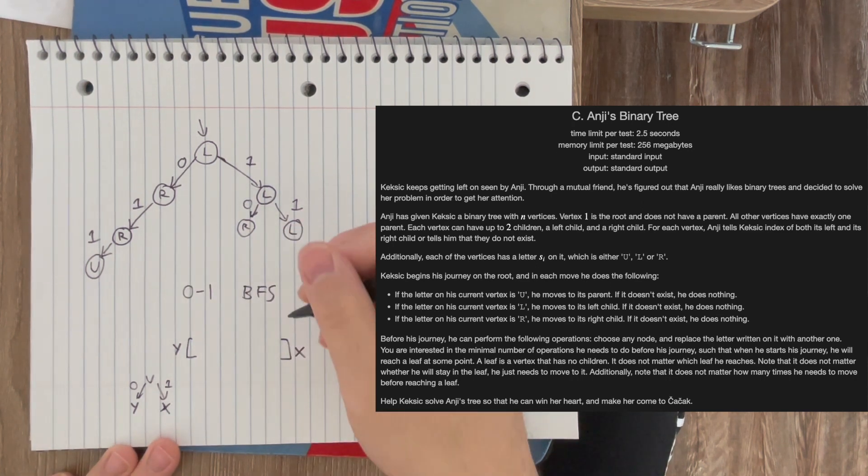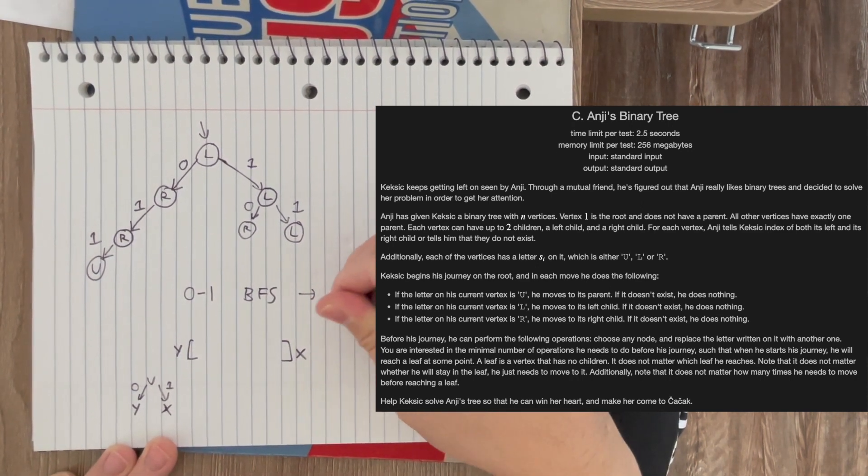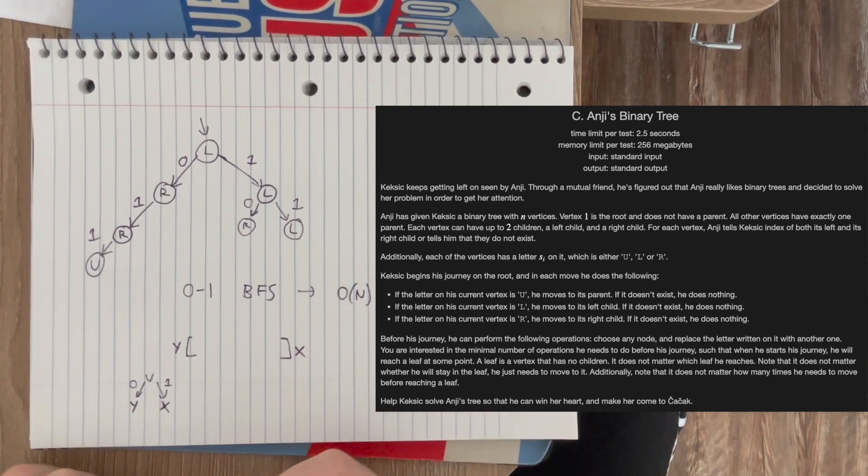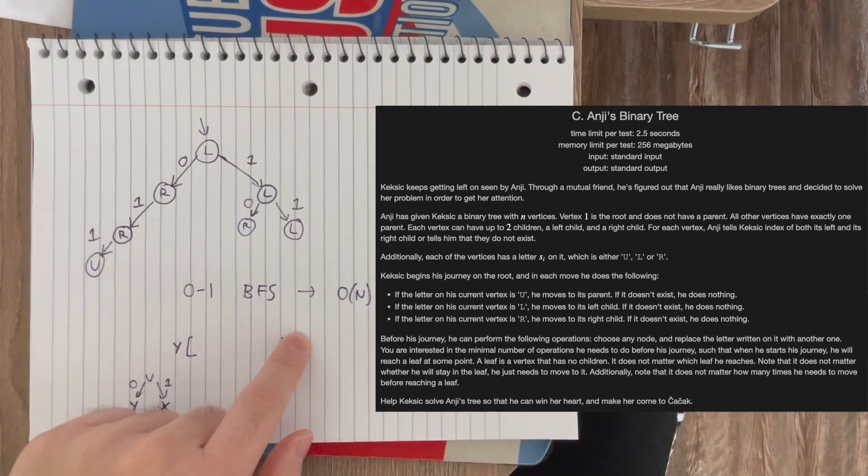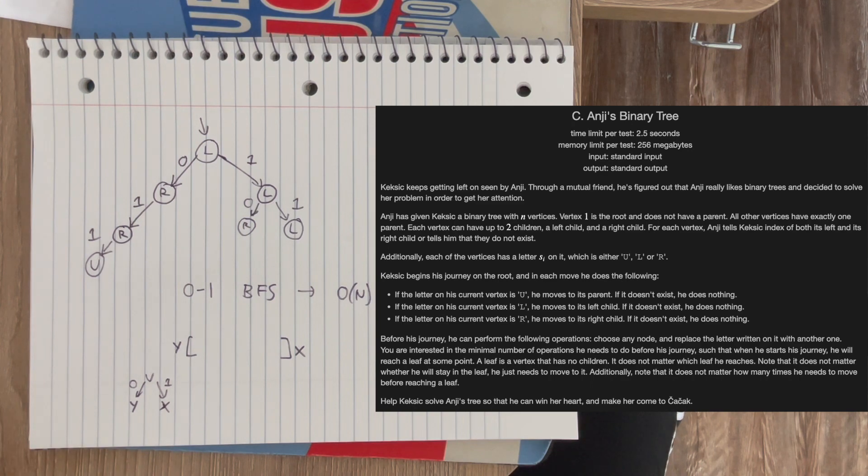And so with a 0-1 BFS implementation, this gives us an O of N complexity. And we can just continue this BFS all the way until the current node that we popped out of the queue is a leaf node.